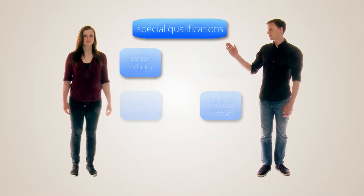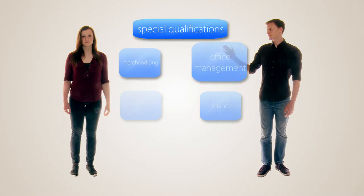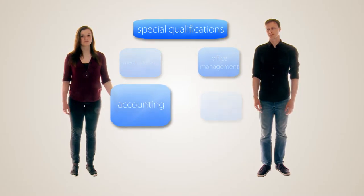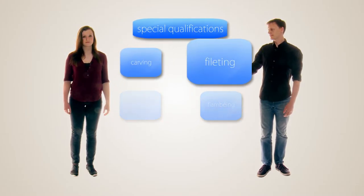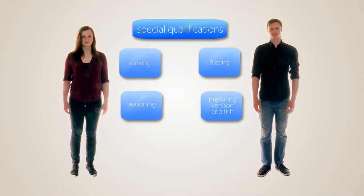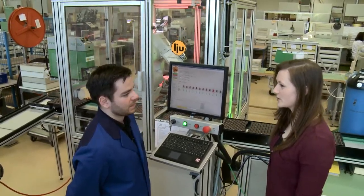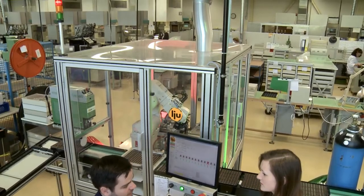For special qualifications, companies can purchase modules needed for the further education of their trainees. For instance, training for certain machines or special techniques. For example, CNC turning, CNC milling, pneumatics, hydraulics, flash welding, digital and analog wiring techniques, power electronics, microprocessor techniques, sensor techniques, SPP techniques, mechatronic systems, finance, merchandising, office management, accounting, flambeying, carving, filleting, seasoning, preparing venison and fish.